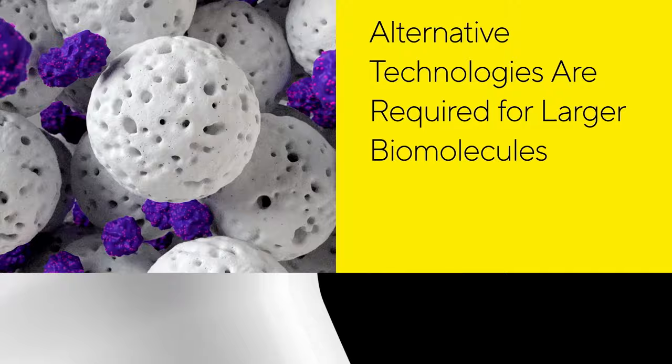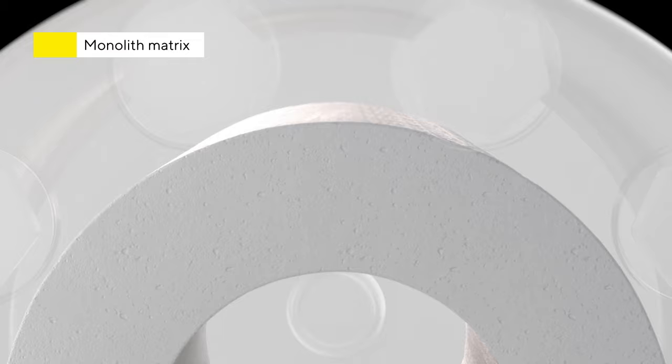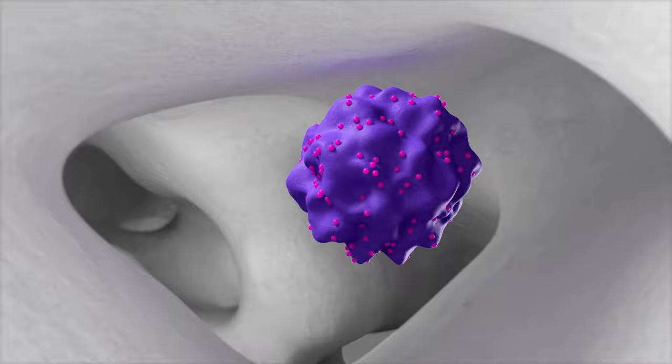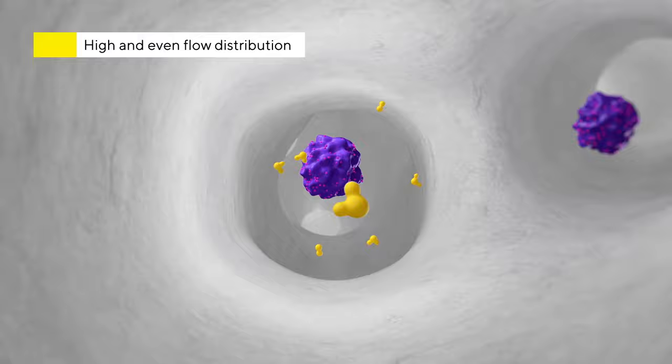Monoliths form a distinct class of chromatographic devices that are delivered in ready-to-use formats. The monolith matrix is made of a porous material that forms a single unit consisting of a highly interconnected network of convective channels. The high connectivity of the channels contributes to a high and even distribution of flow through the matrix.